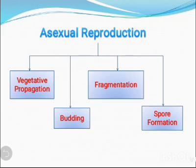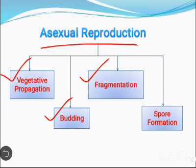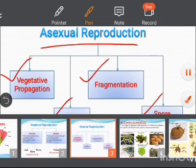In this video, we will discuss about asexual reproduction. In plants, there are different types of asexual reproduction. They are vegetative propagation, budding, fragmentation, and spore formation. These are the four types or different modes of asexual reproduction, which we will discuss in detail in this video.